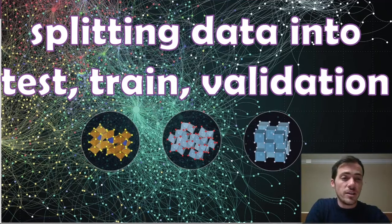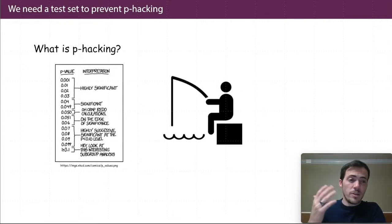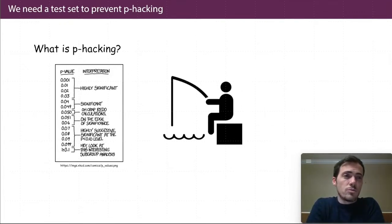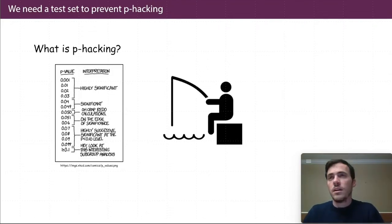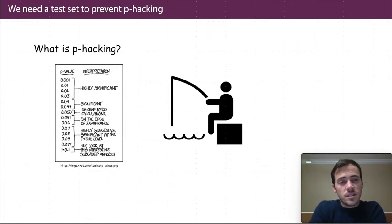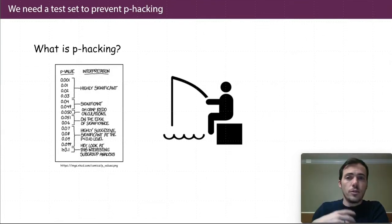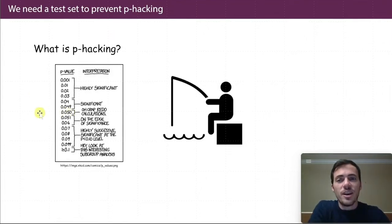First and foremost, we split our data into train, test, and validation because we're trying to avoid this idea of p-hacking. P-hacking relates to the p-value. When you're trying to figure out whether an independent variable is related to your dependent variable — in our linear models, for example — in the real world, this might be like figuring out what's causing people to get sick with COVID. Is it because of being overweight? You can test to see how important that parameter is on the outcome. And if your p-value is over a certain value, which we've sort of magically defined as 0.05, then that is a statistically significant parameter.